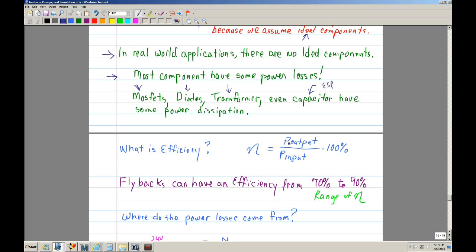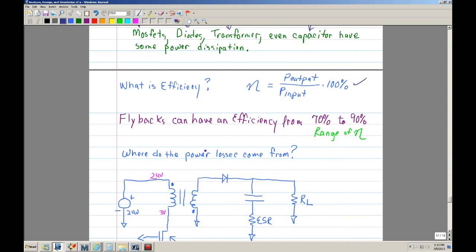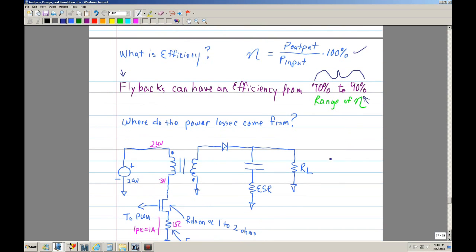We're talking about efficiency. What is efficiency? Efficiency is really defined by the power output divided by the power input times 100%. So basically, that's what efficiency is. It's a measurement, or a ratio, of your output power versus your input power. Typically, flybacks can have an efficiency range from 70% to 80%, or 90%. That's kind of the range that I've observed on some of the applications, or at least the ones that we've designed.